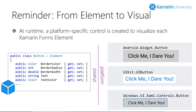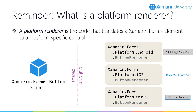For example, our button element would turn into an Android.widget.Button on Android, a UIKit.UIButton on iOS, and a Windows.UI.XAML.Controls.Button on Windows. The code that does this is called a platform renderer. Each element you work with in Xamarin Forms has a unique renderer assigned to it that takes your element instance and creates a unique platform-specific native control to represent it on screen. These renderers are by their very nature platform-specific, so there is a unique renderer object defined for each supported platform.